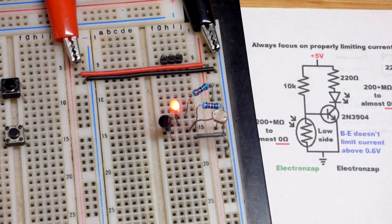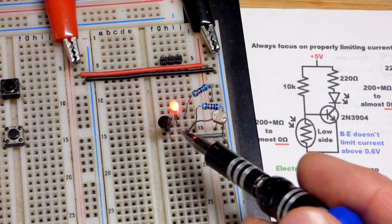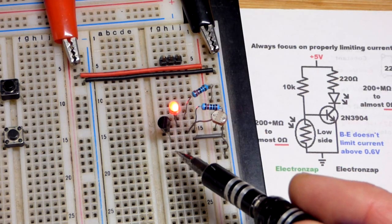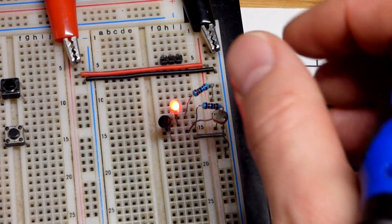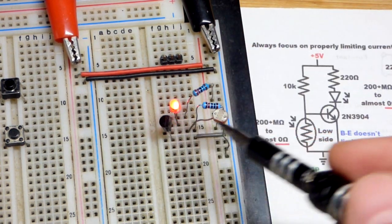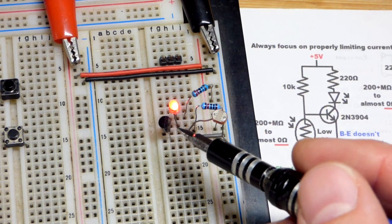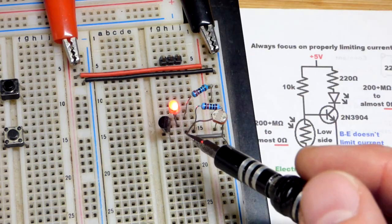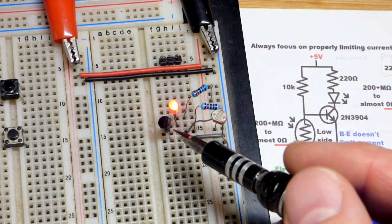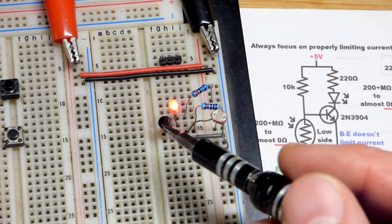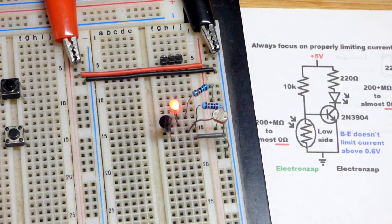But in any case, we get enough light on the light-dependent resistor, it pulls the base voltage below about 0.6 volts or so. Then the transistor turns off. When we get it dark enough, we got that pull-up resistor right there, bringing it above 0.6 volts because this is not connecting to ground as well. Therefore, we have a little bit of base to emitter current. It's going to allow a lot more collector to emitter current, enough to light an LED.